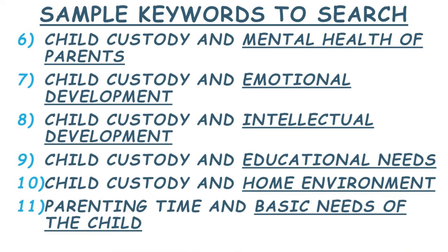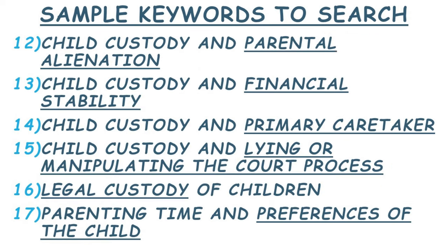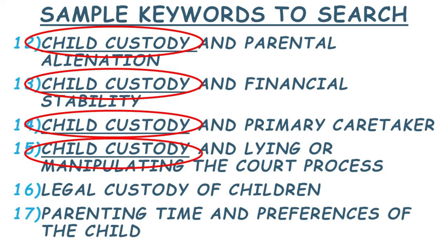Here are more search terms to write down: 'child custody and mental health of parents,' 'child custody and emotional development,' 'child custody and intellectual development,' 'child custody and educational needs,' 'child custody and home environment,' 'parenting time and basic needs of the child,' 'child custody and parental alienation,' 'child custody and financial stability,' 'child custody and primary caretaker,' 'child custody and lying or manipulating the court process,' 'legal custody of children,' 'parenting time and preferences of the child.' I put the words 'child custody' into these search terms to narrow the results to family court cases — otherwise I would get cases not related to child custody, like other civil lawsuits.